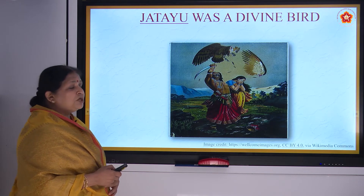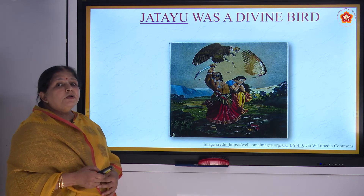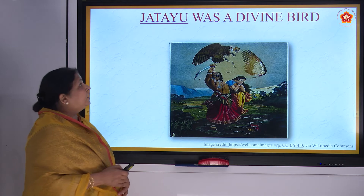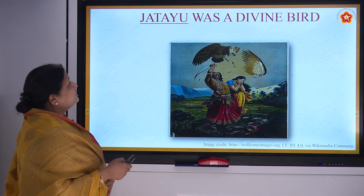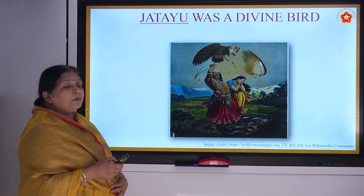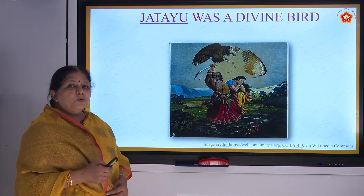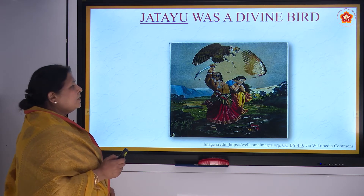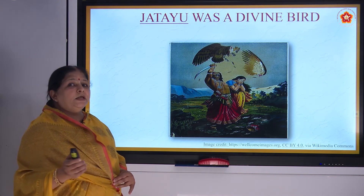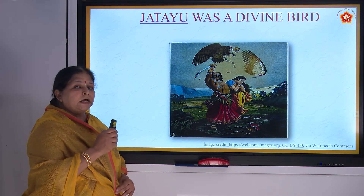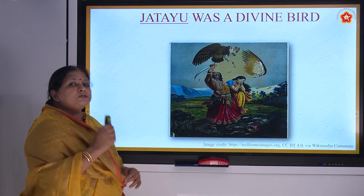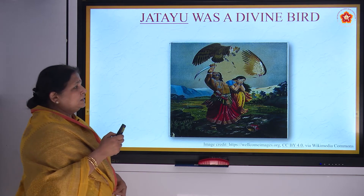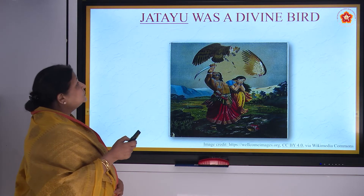J — Jatayu was a divine bird. In the Ramayana, when Ravana had taken Sita, Jatayu was trying to save her and was killed in that effort. K — Krishna teaches the Bhagavad Gita to Arjuna.